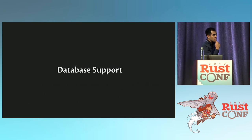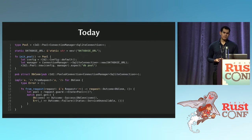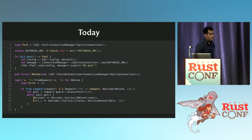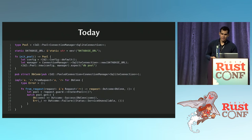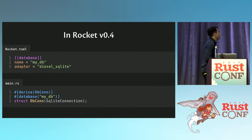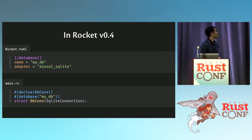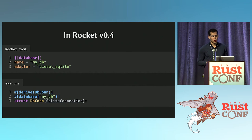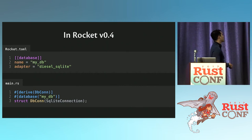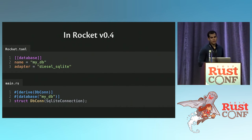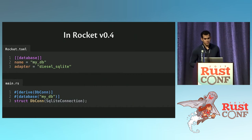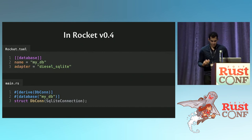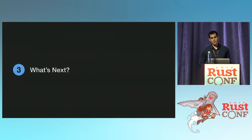The next thing is database support. To use databases with Rocket now, it's a bit cumbersome. In version 0.4, I want this to look like: in your rocket.toml file you specify a database named mydb with adapter diesel sqlite. Then in your Rocket code, you derive some trait and tell Rocket the database you want to access with this type is mydb. Then you can use that type as a request guard. Taking something very big to something very small — we really want to get rid of boilerplate while keeping type safety.